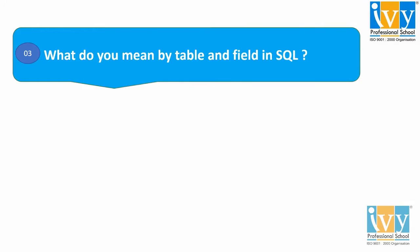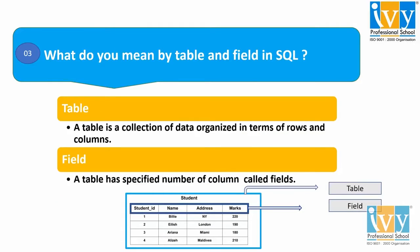Moving to our third question: what do you mean by a table and a field in SQL? A table is a collection of data organized in terms of rows and columns. In the picture, you can see the example of a table; the name of the table is 'student.' A field refers to a table that has a specified number of columns. In the table 'student,' we can see there are four fields: student ID, name, address, and marks.